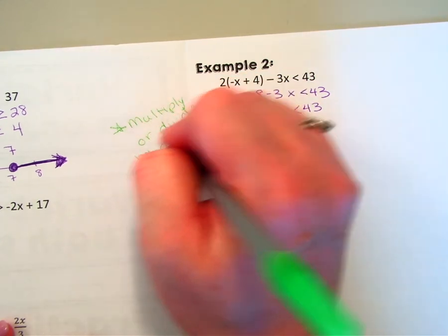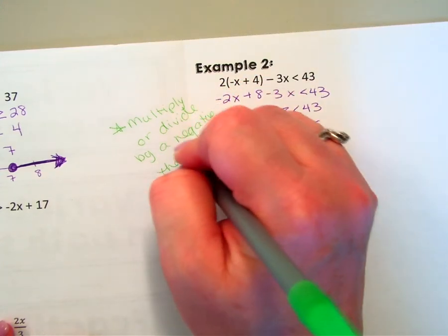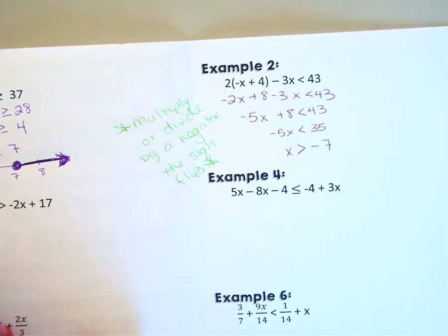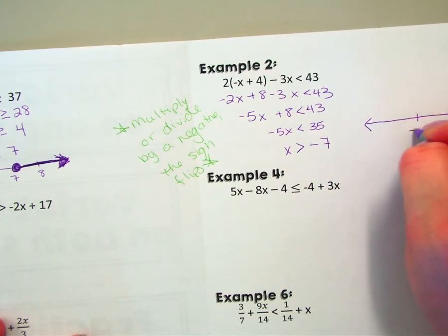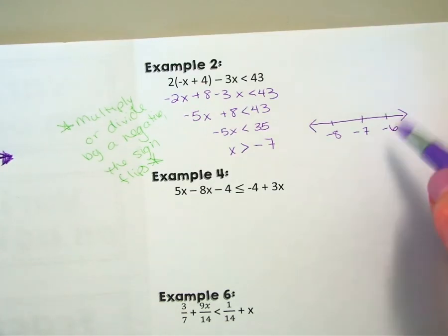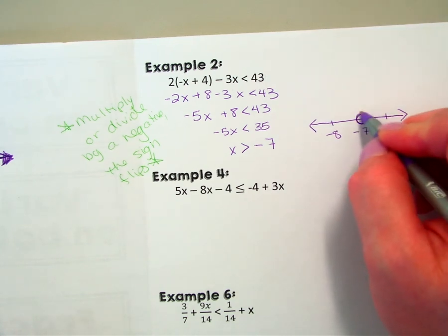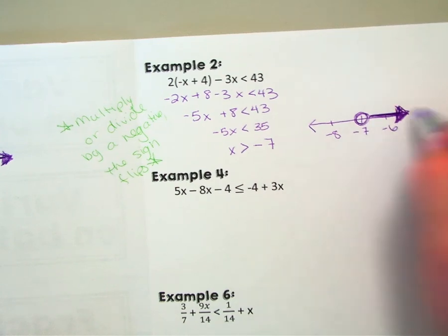I'm going to go ahead and make my number line. This time I'm over in the negatives, so negative 7. One lower would be negative 8, one higher would be negative 6. Open circle because it is not or equal to, and because the sign flipped, x is greater this time, so I'm going to go this way to the right.